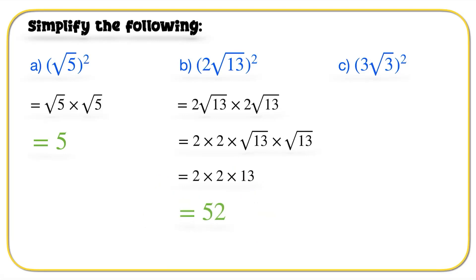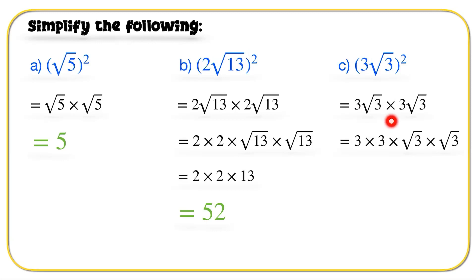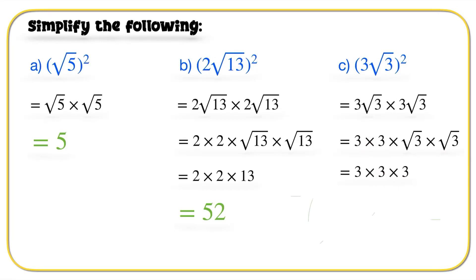Finally: 3 root 3, all squared. So that's 3 root 3 times 3 root 3 — there's a lot of 3s there. We get 3 times 3 times root 3 times root 3. Root 3 times root 3 gives us 3. So 3 times 3 times 3 gives us 27.